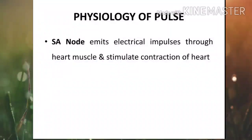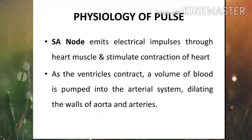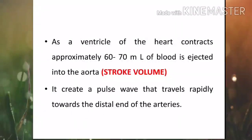The SA node emits electrical impulses through the heart muscle and stimulates the contraction of the heart. Every time the ventricles contract, a volume of blood is pumped into the arterial system, dilating the walls of the aorta and arteries. Approximately 60 to 70 ml of blood is ejected into the aorta, and that is known as stroke volume. This creates a pulse wave that travels rapidly towards the distal end of the arteries, and when the pulse wave reaches a peripheral artery, you can feel it by palpating the artery.